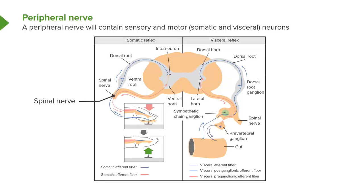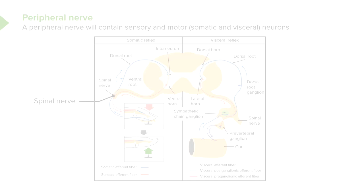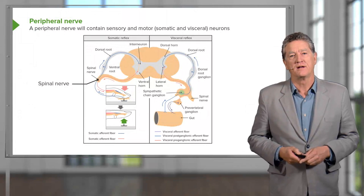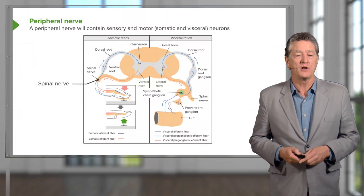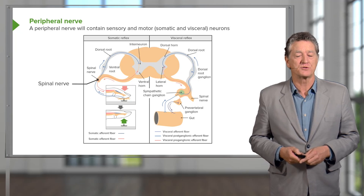That cell body also has an axon that projects out through the spinal nerve to the periphery. That axon receives information from the periphery — in this case about the pain after a finger prick. That information travels from the area that's been pricked, through the axon, all the way up through the dorsal root, through the axons associated with this sensory neuron, whose cell body is located in the dorsal root ganglion.